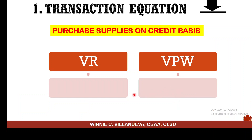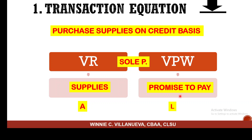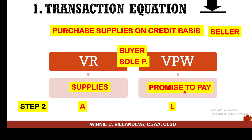Now the situation is reversed — you are the buyer. You purchased supplies on account. What did the business receive? Supplies. What did it give out? A promise to pay — you are now the one making the promise to pay. The supplies received become yours — they are an asset. The promise to pay is an obligation you now have, which is a liability. The transaction is between the business (buyer) and the supplier (seller).